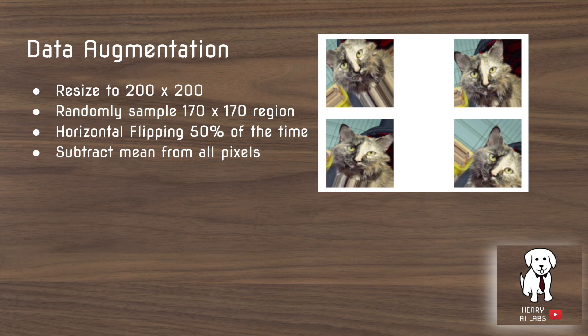For data augmentation, they resize all video clips to 200 by 200 pixels, randomly sample a 170 by 170 region, and then with 50% probability they horizontally flip the images. Additionally, they pre-process the images by subtracting the mean from all pixels.